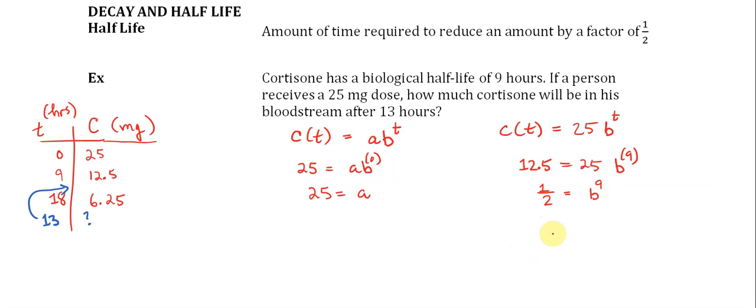In order to undo this 9 up here, we can raise both sides by one ninth because b to the ninth to the one ninth is just b. So we're going to raise this side as well to the one ninth power. That tells me that on the right side of the equation, nine times one ninth is just one, so we have b. Over here we have one half to the one ninth power. That's equal to b. So our equation is now C(t) is equal to the initial amount which is 25 times the base which is one half to the one ninth, and all of that raised to the tth power.